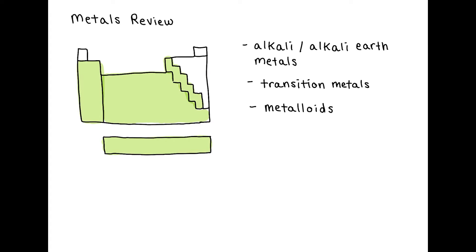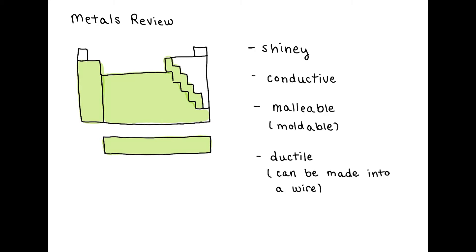The center of the periodic table is completely composed of transition metals, and then the staircase which is on the right side of the periodic table is the metalloids, which are semi-metals.